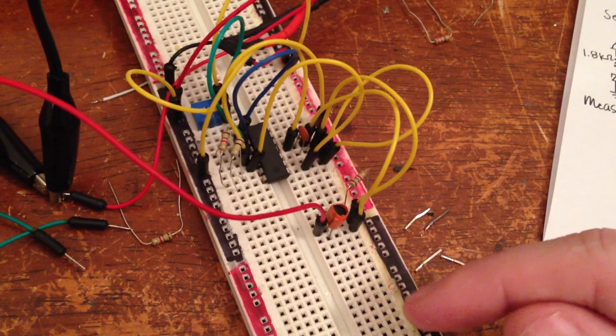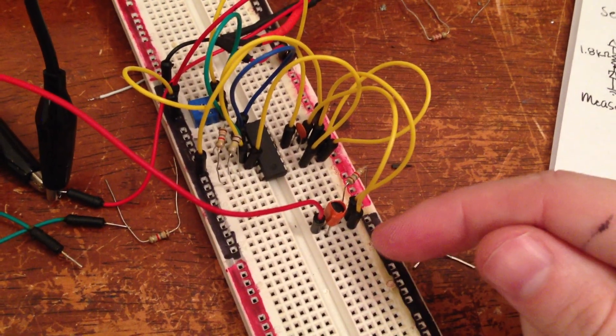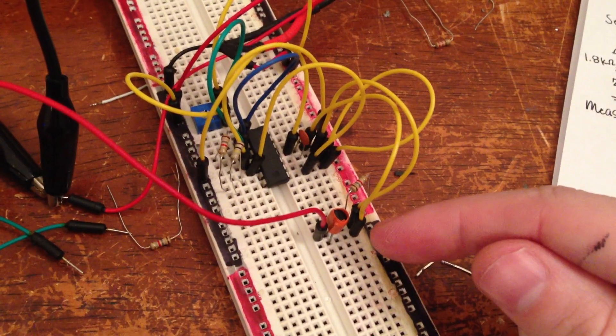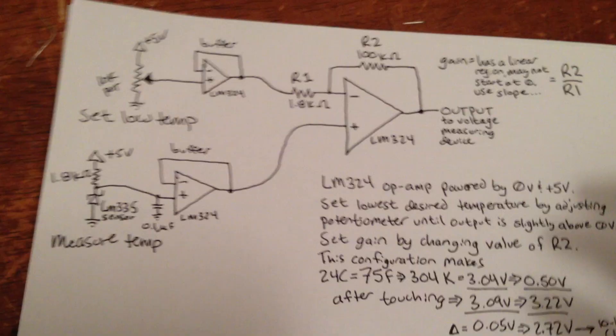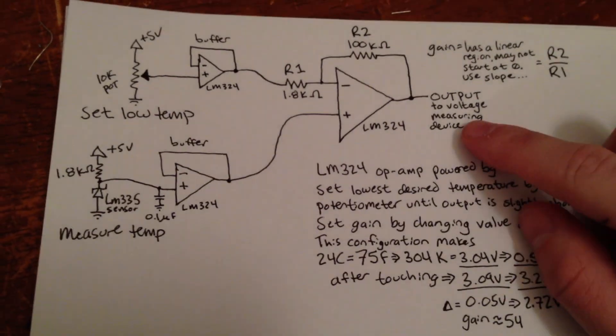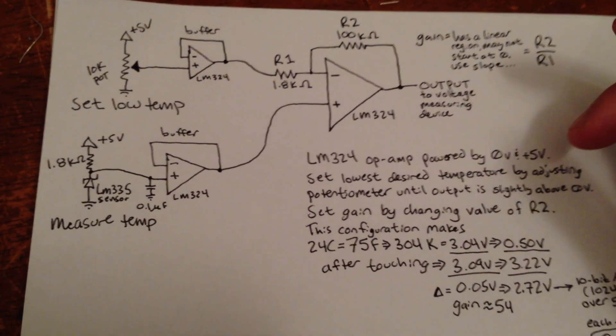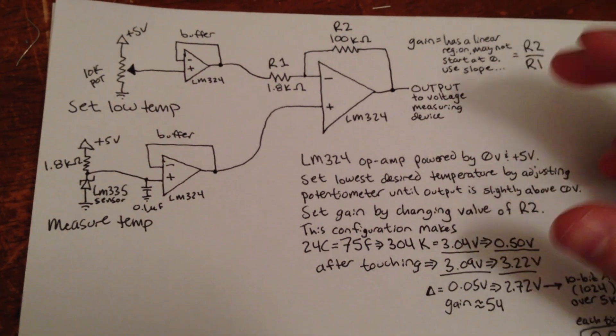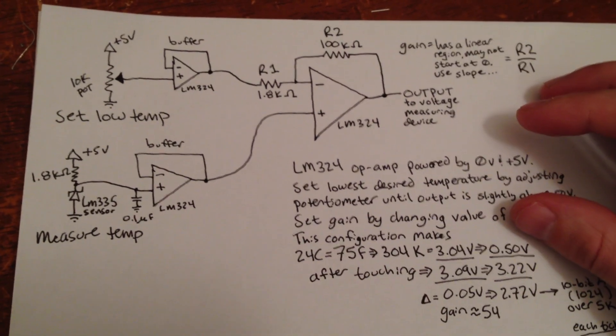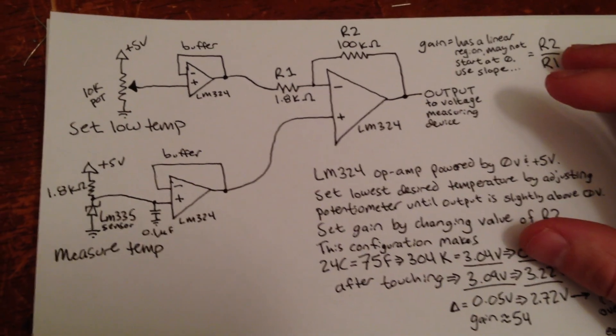So the way that I do that is I set a lowest temperature of interest, and then I set a gain. And then it outputs, at the end of the day, a voltage which swings all the way from 0 volts to about 5 volts over only a few degrees. And it does it linearly, so I can measure very accurately.